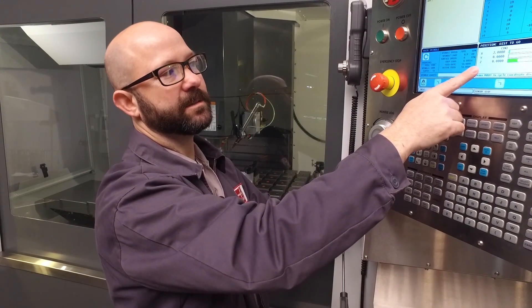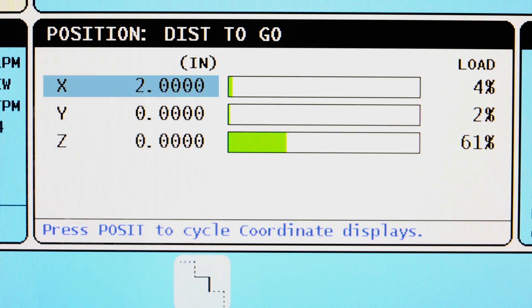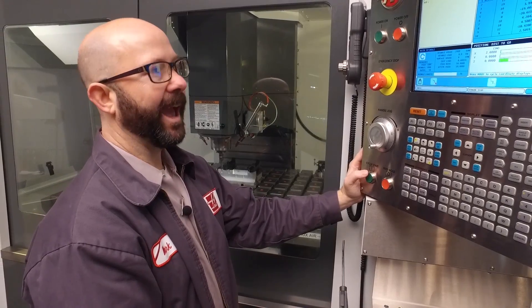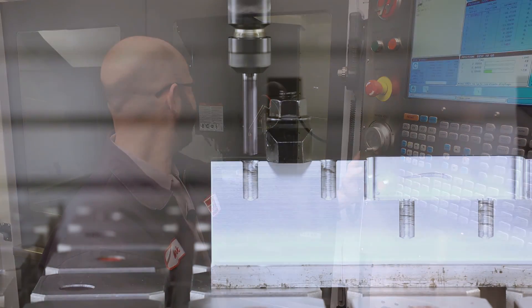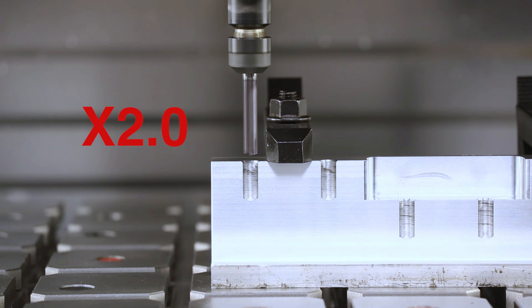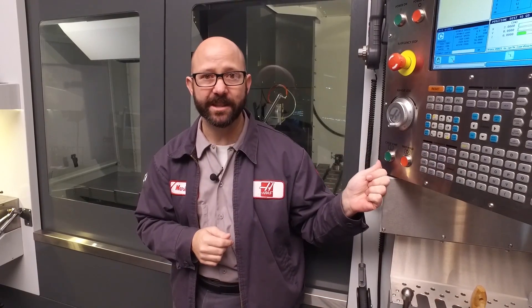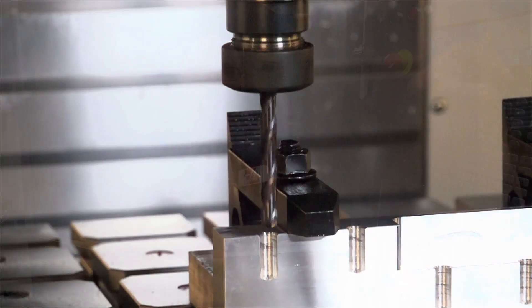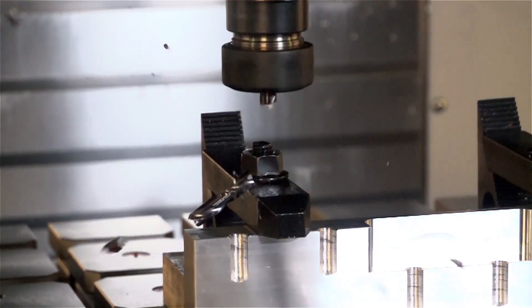My screen now says distance to go, X 2.0, Y zero, Z zero. X 2.0. My tool is sitting right next to our clamp. If it really is going to move two inches to the right right now, something terrible is going to happen. If I press that cycle start button, it's going to move X two inches to the right and break that tool.